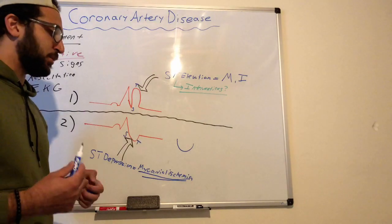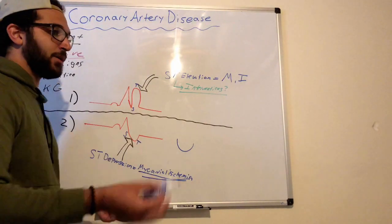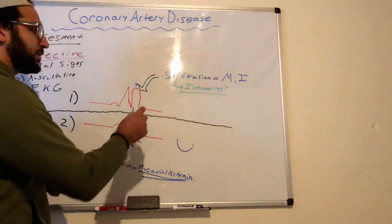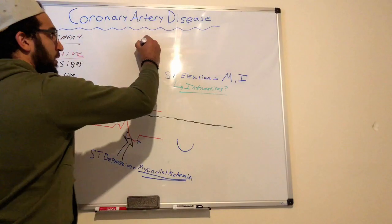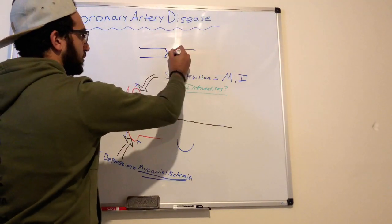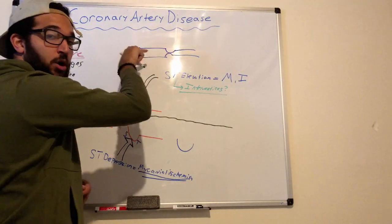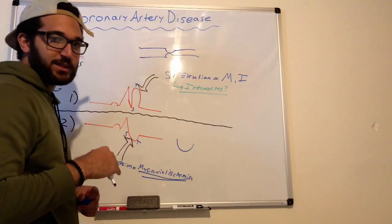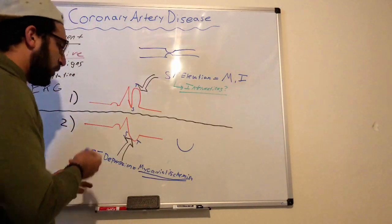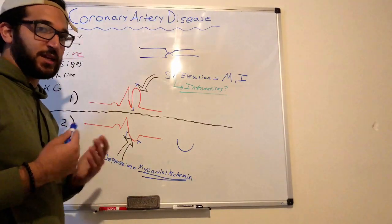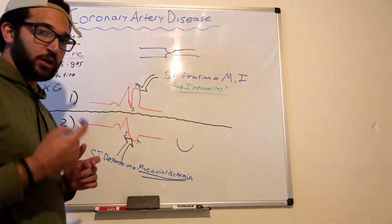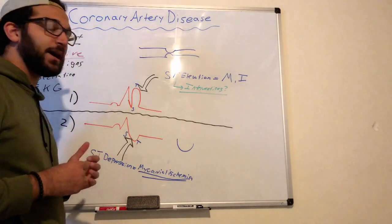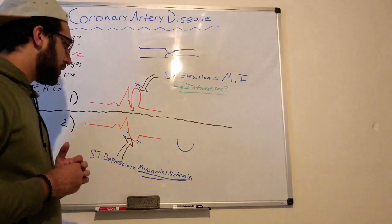ST depression means the patient is not able to deliver oxygenated blood flow to the myocardium — there is some kind of block, but it's not a complete block. A full block is an ST elevation, meaning the arteries are completely spasmed with no more blood flow reaching the myocardium, therefore switching it to anaerobic metabolism. Nursing interventions include nitroglycerin sublingual, giving the patient oxygen, and possibly placing a stent to reperfuse the coronary artery.